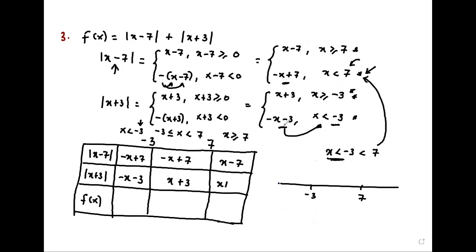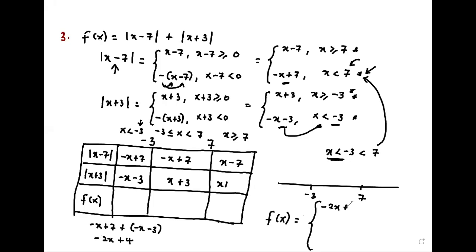So now we can add our function. You add in each interval. The first interval: f is going to be negative x plus 7 plus negative x minus 3. This will be negative 2x plus 4, for x less than negative 3.